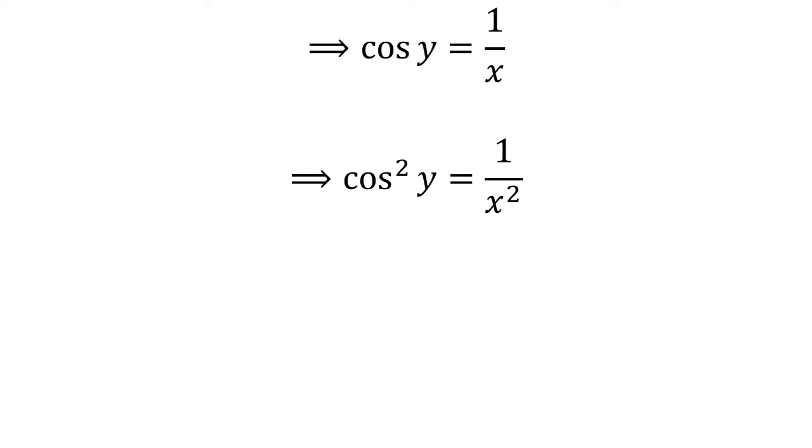Squaring both sides, we got square of cosine of y is equal to 1 divided by square of x. Multiplying both sides by minus 1 and adding 1 to both sides gave us 1 minus square of cosine of y is equal to 1 minus 1 divided by square of x.